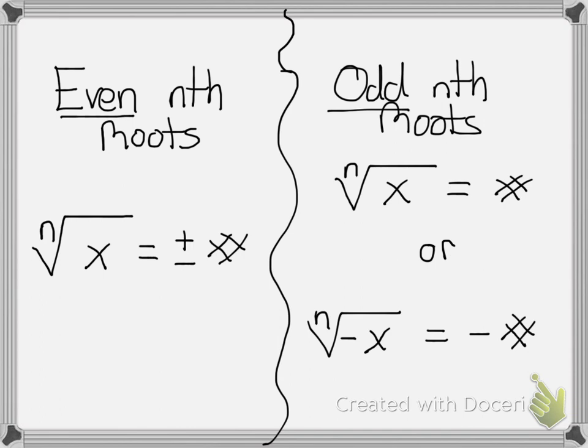So basically, all this is saying is that when your nth root, meaning this number right here, is an even number, whatever answer you get, make sure you put plus or minus in front of your solution. If your nth root is an odd number, whatever answer you get, that's just what you get.